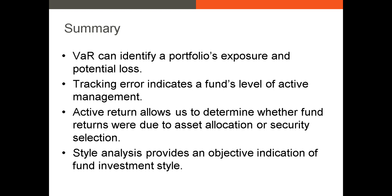Let's summarize what we covered. First, I introduced value at risk, one of the primary tools for assessing market risk and the possible loss from an investment over the next period. Next, I discussed tracking error, which indicates the amount of active management of a portfolio — the higher the tracking error, the more active the fund's management. Then I discussed active returns, which can be broken down into asset allocation return and security selection return. Finally, I briefly covered style analysis, which allows you to objectively assess the investment style of a fund by comparing performance to several benchmarks. If you have any questions, please feel free to reach out. Thank you.